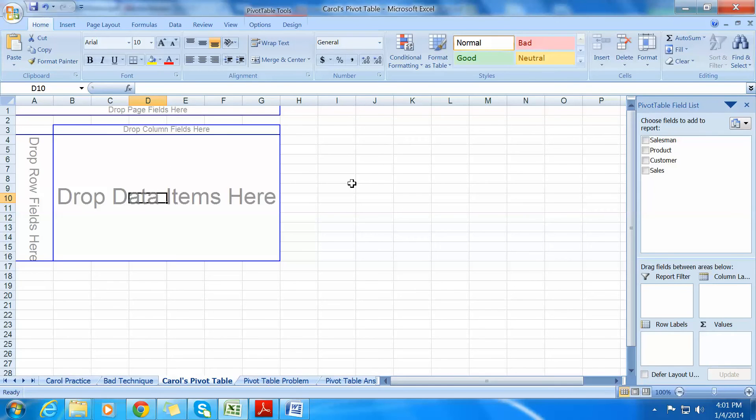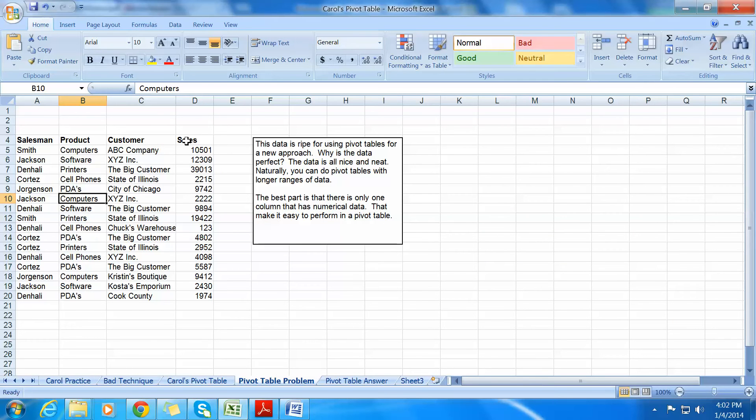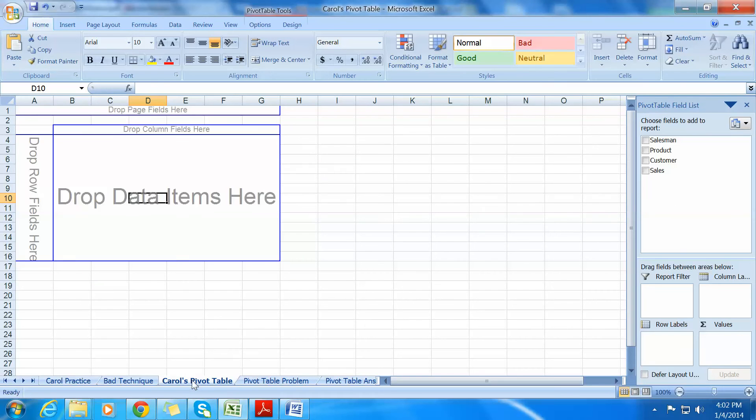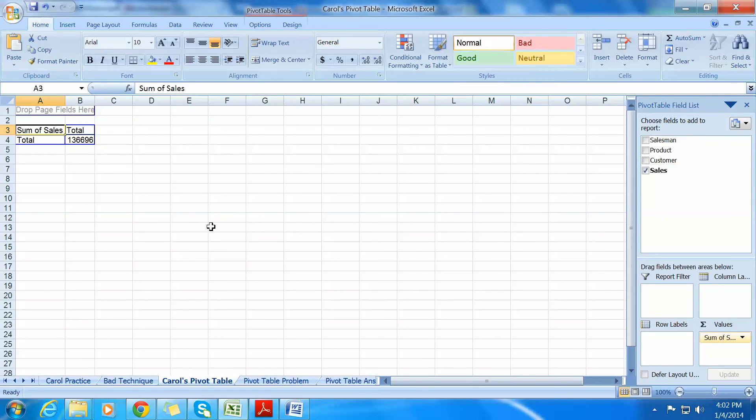The very first thing that I do is I bring over the column that had the numbers. So if we go back here to pivot table problem, you'll remember that the one column that has the data, the numbers, is sales. So going back to Carol's pivot table, I take sales, and I drag it right here. This is where I want it. I want this to be analyzed. And immediately this changes. Now, the next thing that you can do is you can start dragging over your descriptors or your adjectives. I call that salesman, product, and customer.